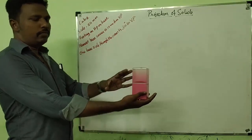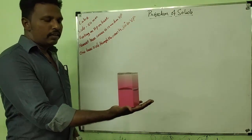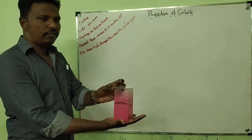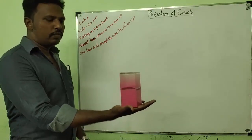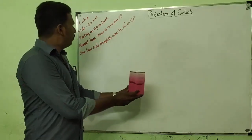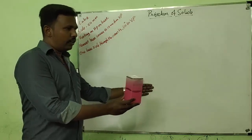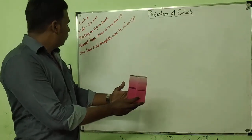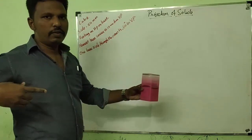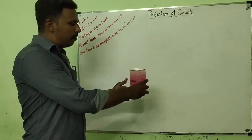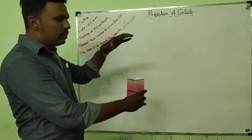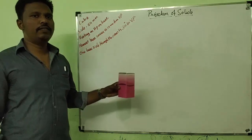A cube of side 50 mm is resting with its base on HP. It is given that the nearest base corner is 10 mm from the VP. One base side through that corner is at 30 degrees to VP. So the edge coming from the nearest corner is at 30 degrees to VP, and that 30 degree angle will be visible on the top view.